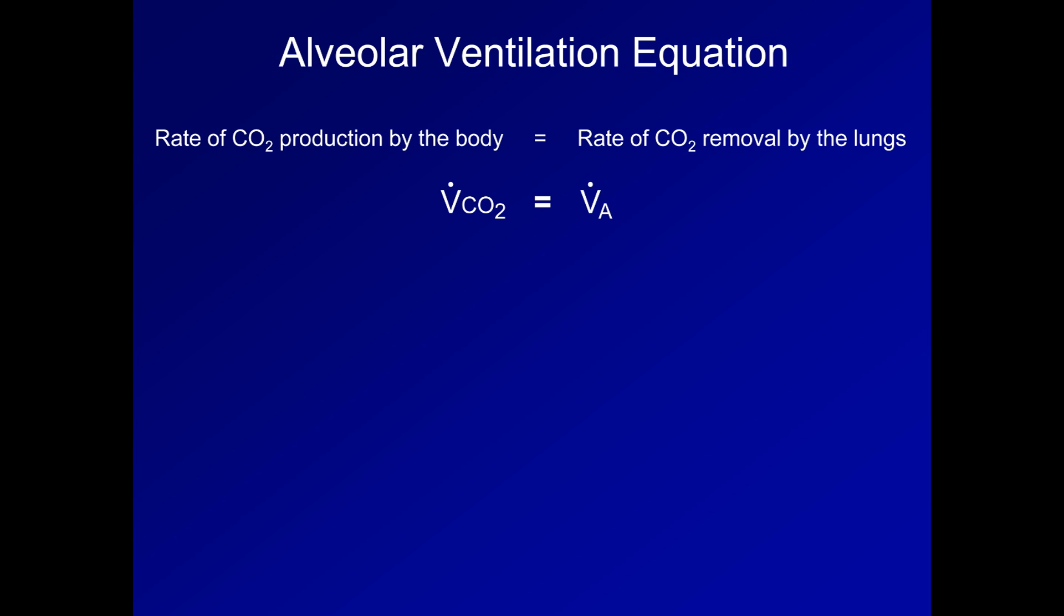So V dot CO2 equals V dot big A, which is the rate of total gas flow from the alveoli, which is another way of stating the alveolar ventilation, multiplied by the F big A CO2, or the fractional concentration of CO2 in alveolar gas. From Dalton's law, we know that P big A CO2 equals P big A times F big A CO2. Therefore using substitution, we can say that V dot CO2 equals alveolar ventilation times P big A CO2 divided by intra-alveolar pressure.